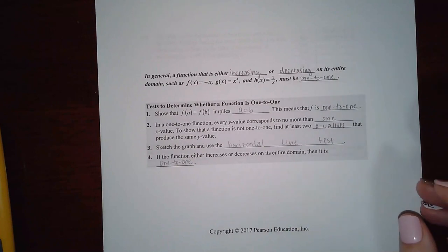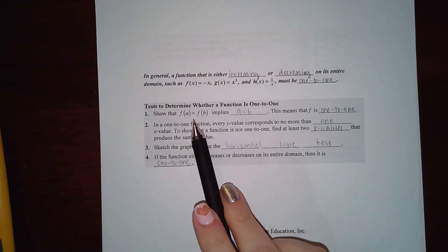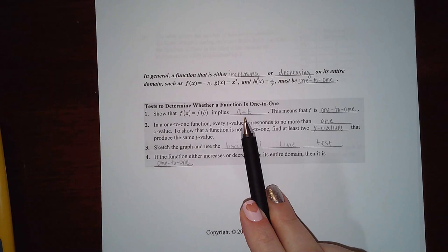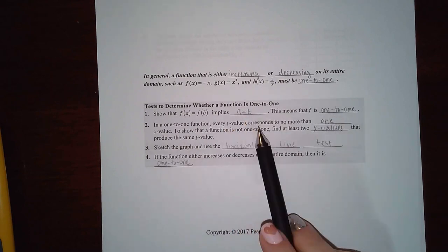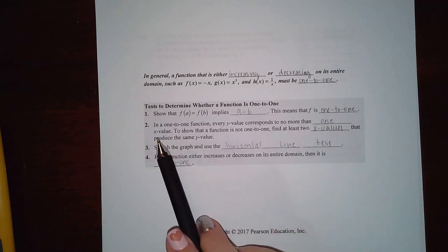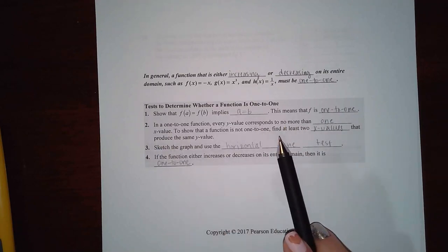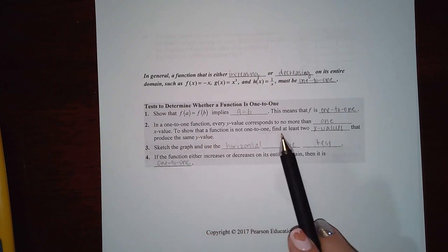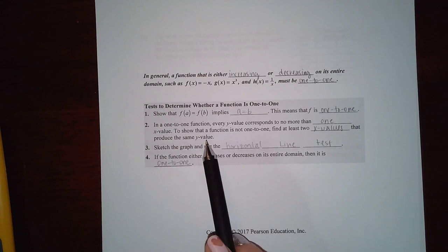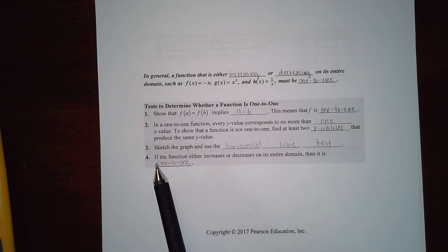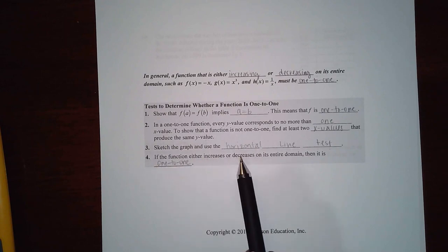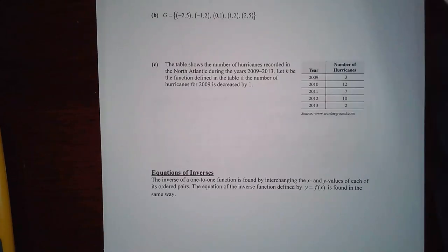To summarize: if the y values are equal, you should get the x values equal — that means it's one-to-one. Every y value corresponds to no more than one x value. To show a function is not one-to-one, find at least two x values that produce the same y value, or sketch the graph and use the horizontal line test. If a function either increases or decreases on its entire domain, then it's one-to-one.